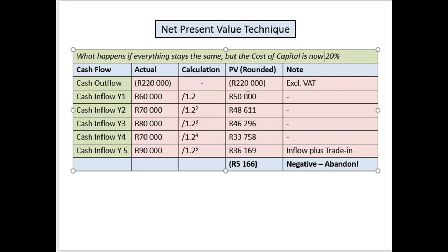Now these values are a little less, so your positive values are now less while your negative value stays the same. When you add them up you get a negative value, and if the value is negative you abandon — because it's not meeting your expectations. But now we can actually calculate the next one, which is the internal rate of return.